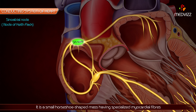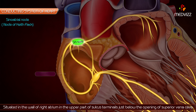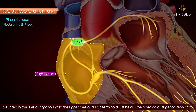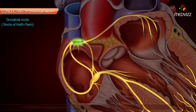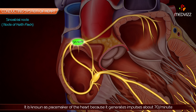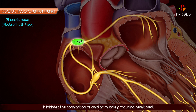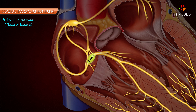The sinoatrial node, also known as the node of Keith-Flack, is a small horseshoe-shaped mass of specialized myocardial fibers situated in the wall of the right atrium, in the upper part of sulcus terminalis just below the opening of the superior vena cava. It is known as the pacemaker of the heart because it generates impulses about 70 per minute and initiates the contraction of cardiac muscle, producing a heartbeat.